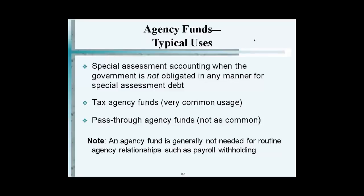Here is the example in the book: the county sends a tax bill, receives the money from all the taxpayers, and then an accountant determines 30% goes to the school, 30% goes to this town, and so on. And 1% is deducted for the county's administrative fee. That's a tax agency fund.